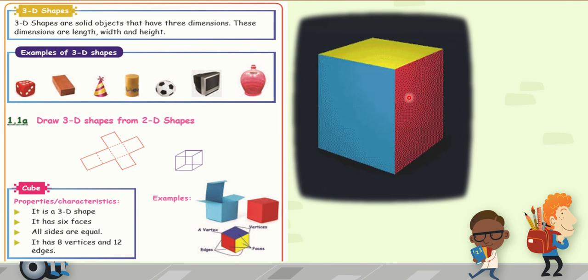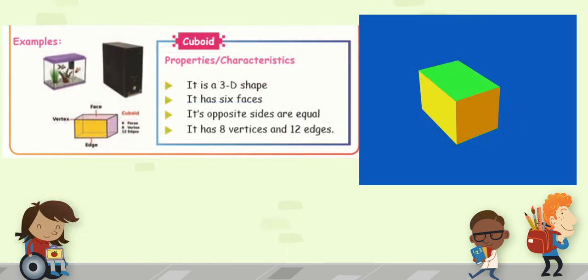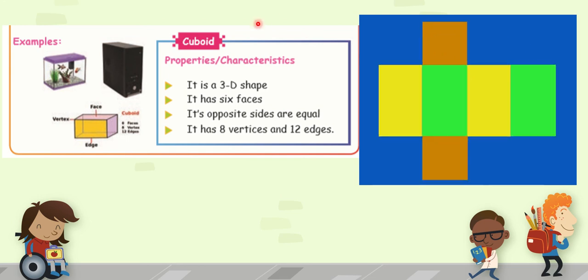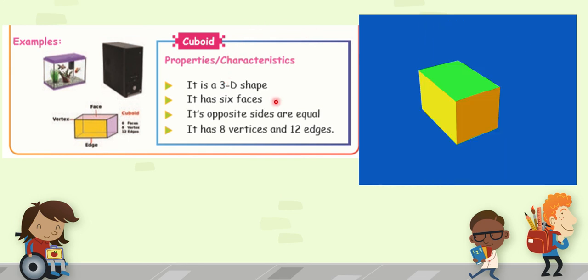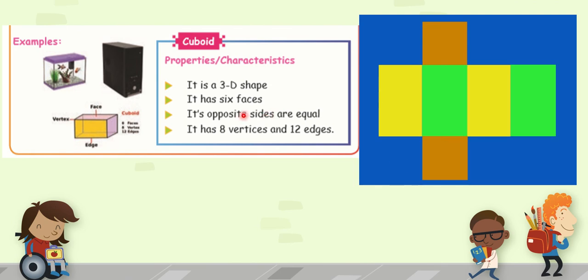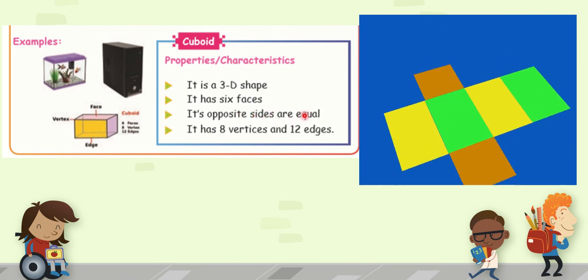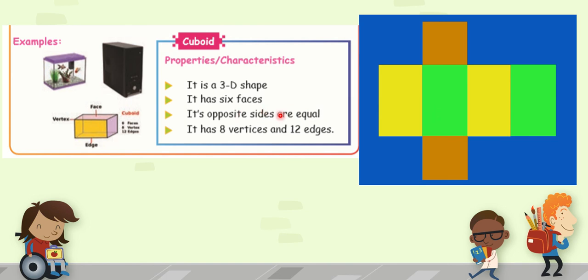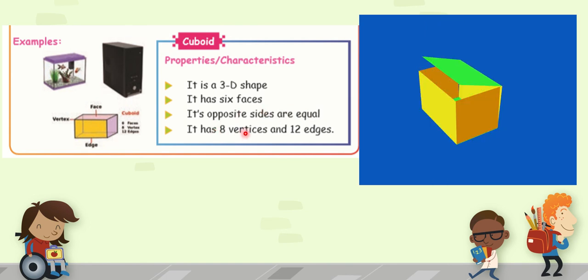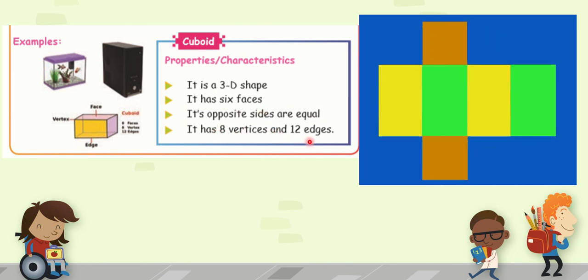Next, we will be moving into cuboid. Cuboid also is a 3 dimension shape. It has 6 faces. Its opposite sides are equal. Same as that of cube. It is also having 8 vertices and it is also having 12 edges.